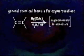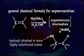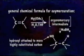The general chemical formula for an oxymercuration reaction: an alkene reacts with mercuric acetate and water in a tetrahydrofuran solvent to yield an organomercury intermediate. The organomercury intermediate is then treated with NaBH₄ to yield the final product, which has a hydroxyl group attached to the more highly substituted carbon.